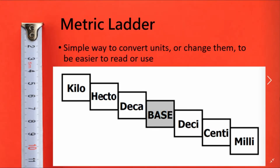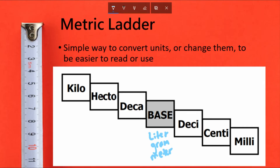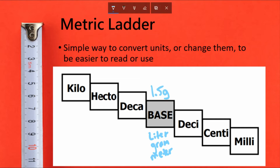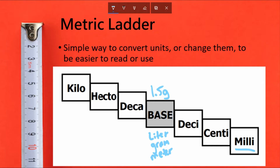Now with the ladder we're going to actually convert some numbers, but we've got to remember that our base stands for liter, gram, or meter. Say we have a number such as 1.5 grams and we need to convert that to milligrams — we know we're going to be going down the ladder. If we're going to kilograms instead, we're going to be moving up the ladder, and that changes what we do.